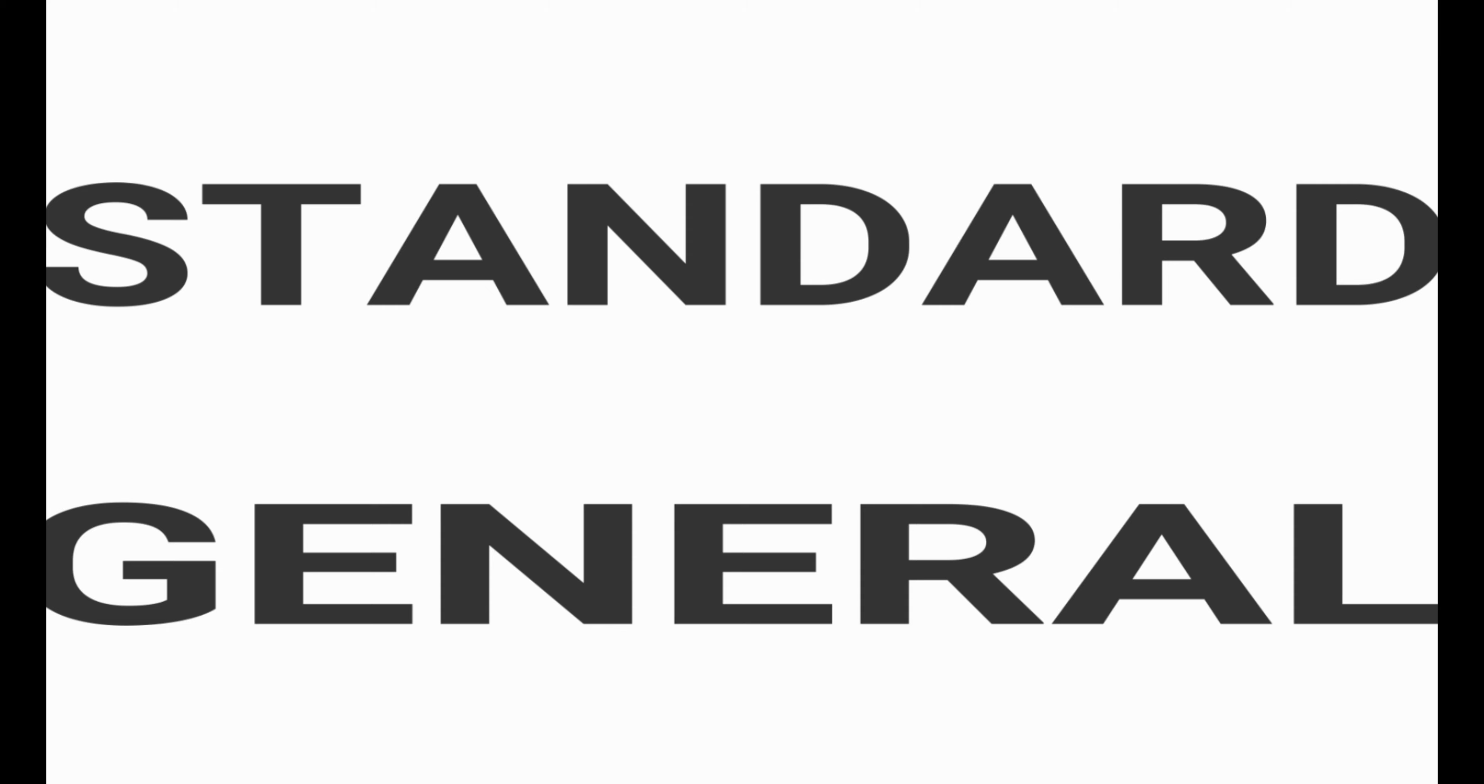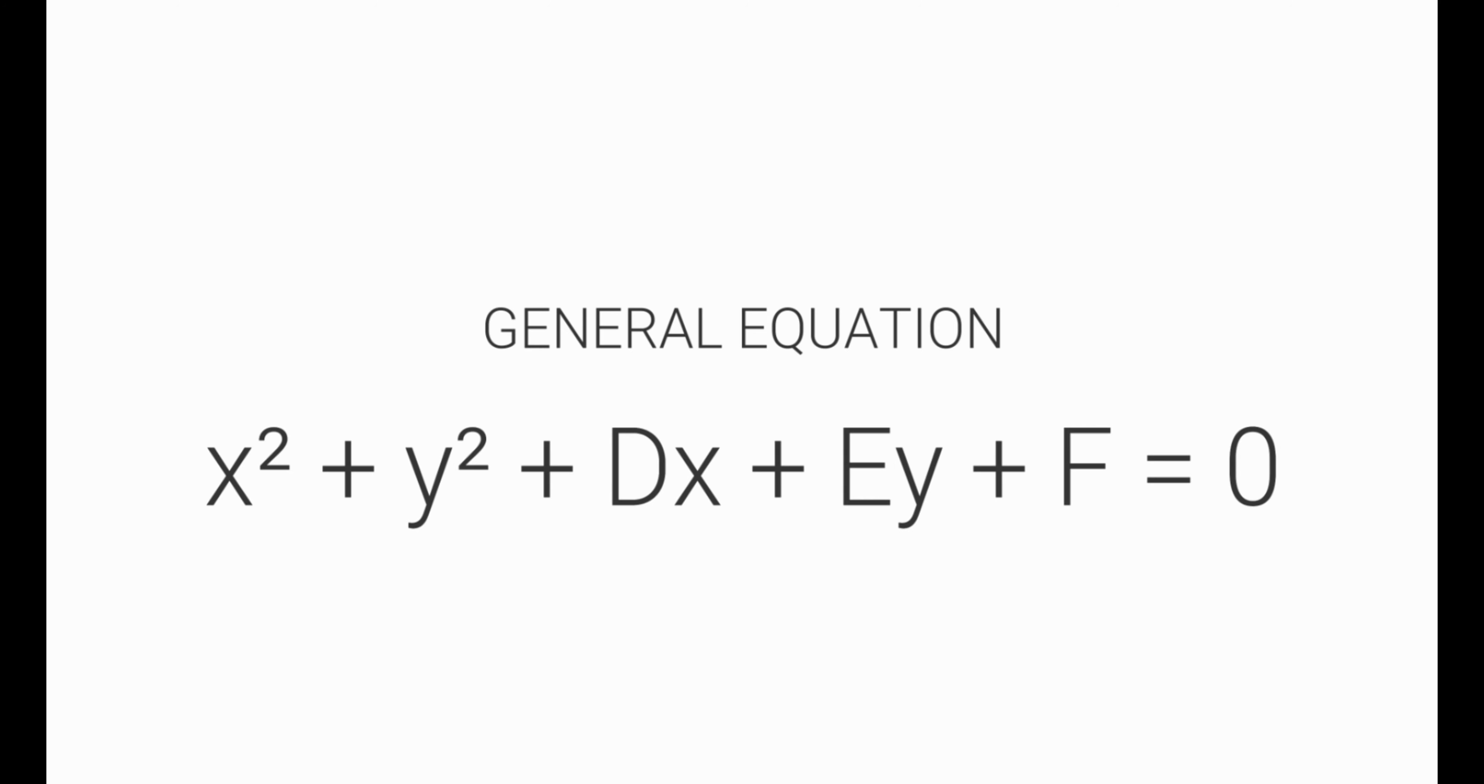There are two equations of a circle, the standard equation and the general equation. The standard equation is the quantity of x minus h squared plus y minus k squared is equal to r squared. And the general equation is x squared plus y squared plus dx plus ey plus f is equal to zero.